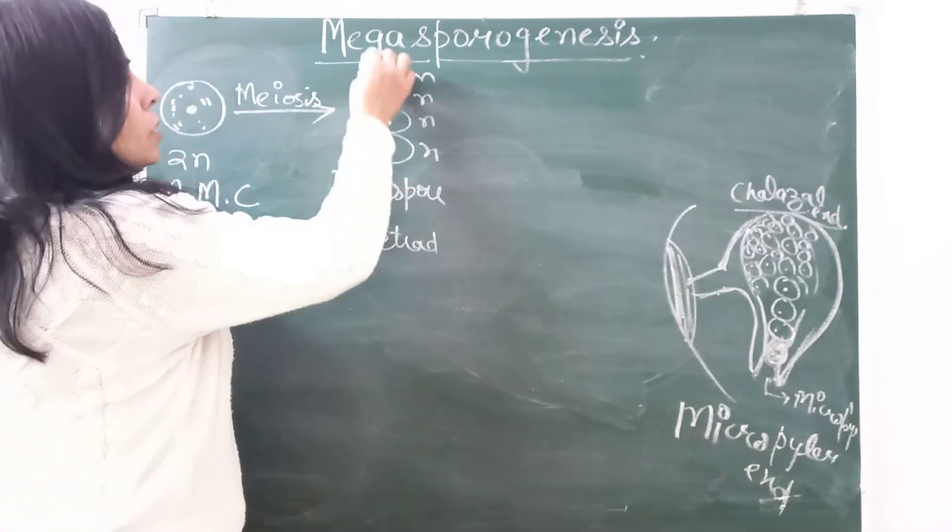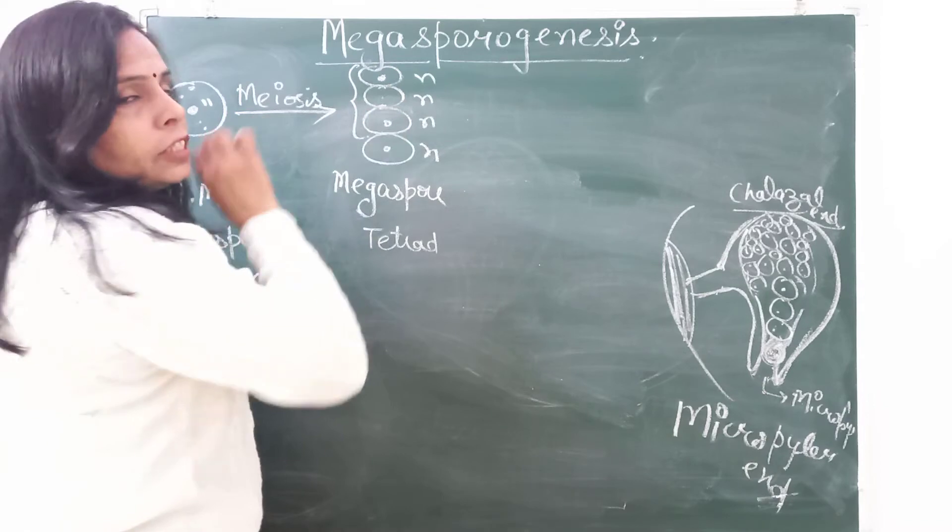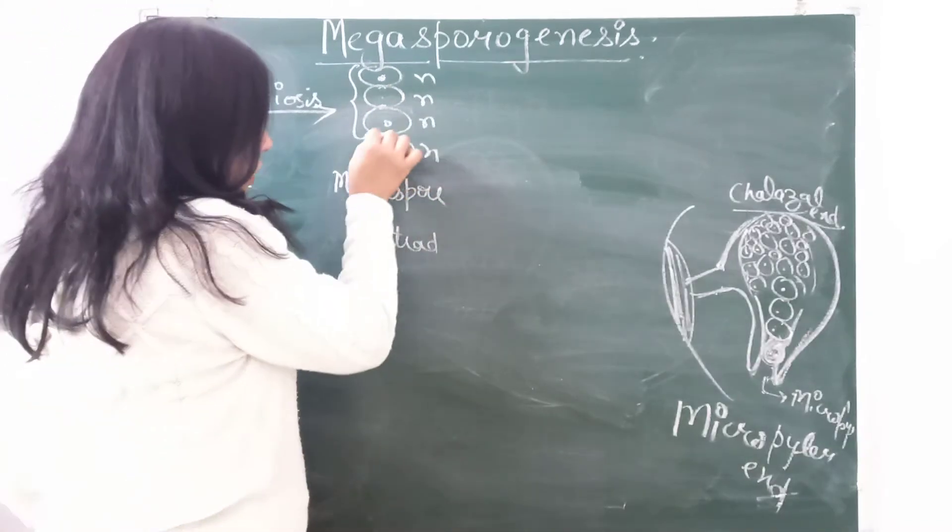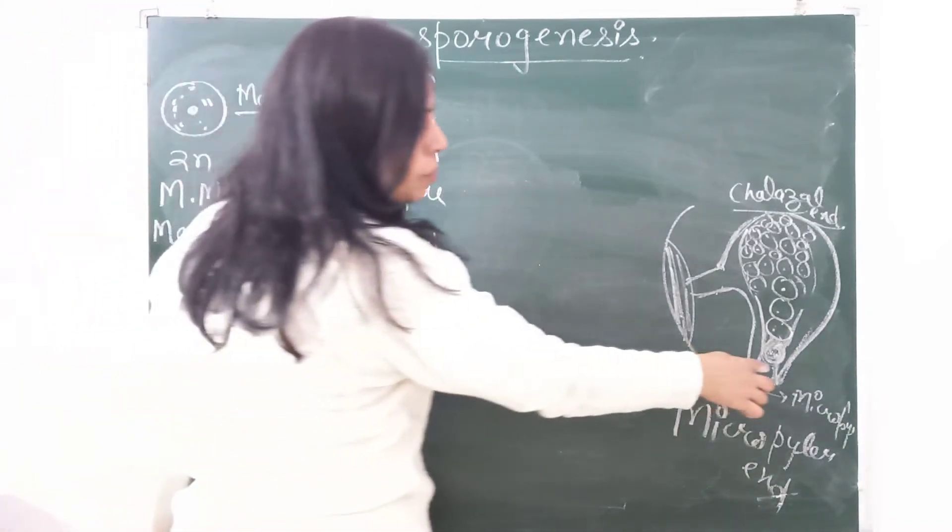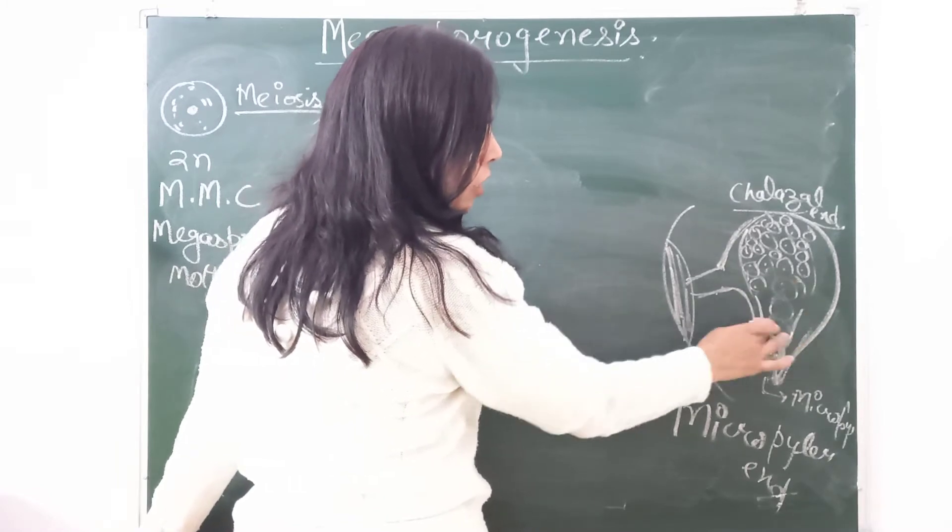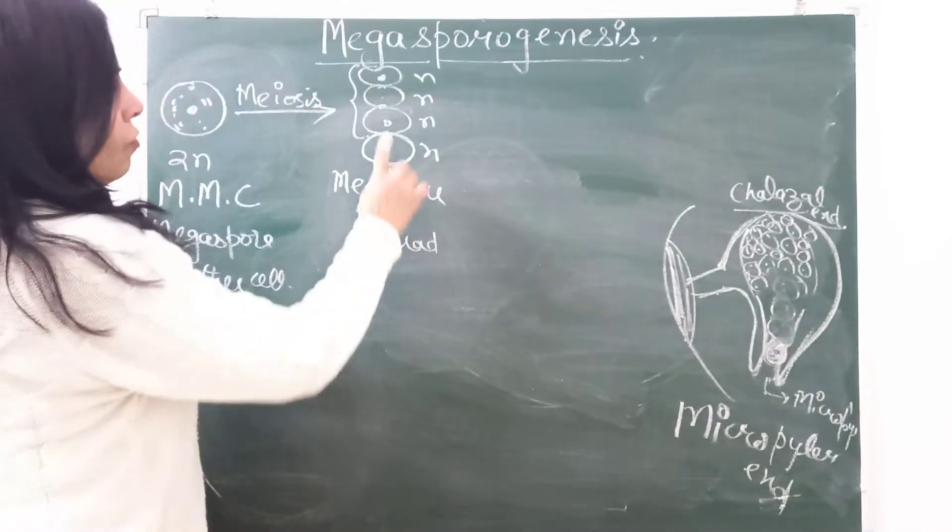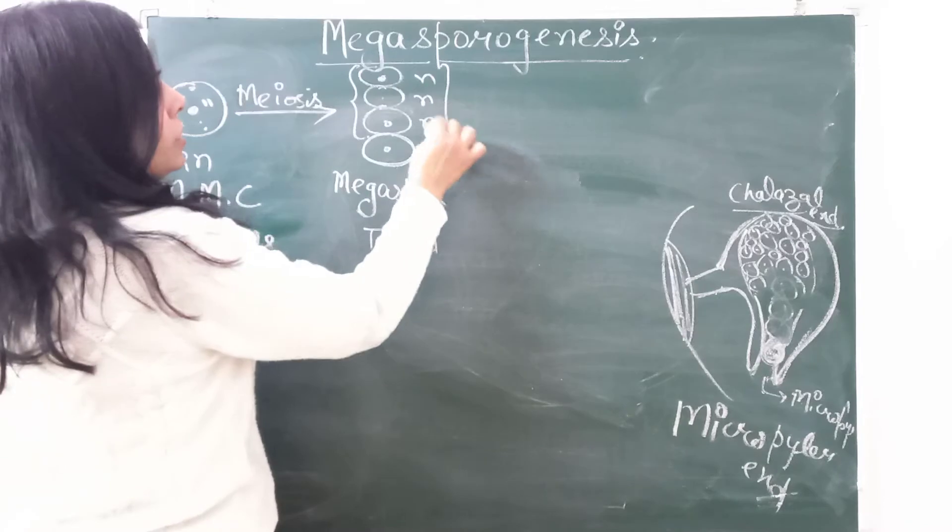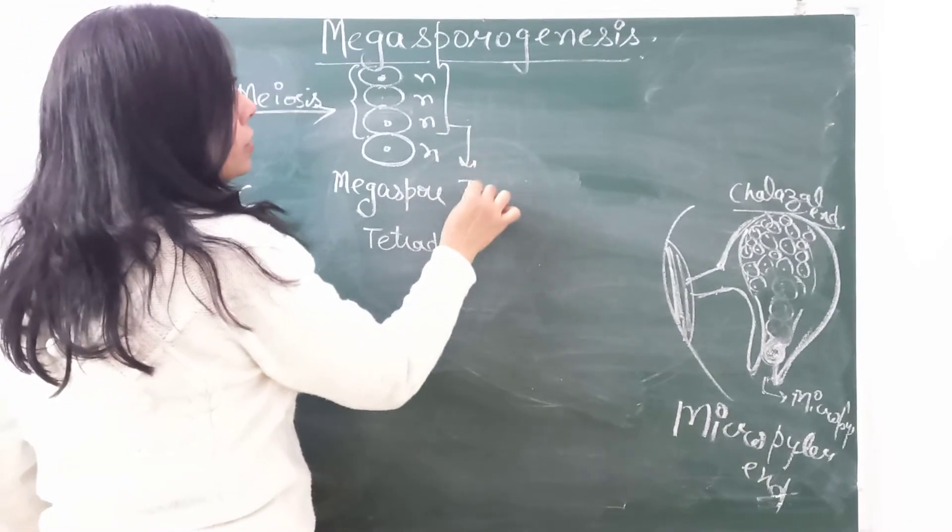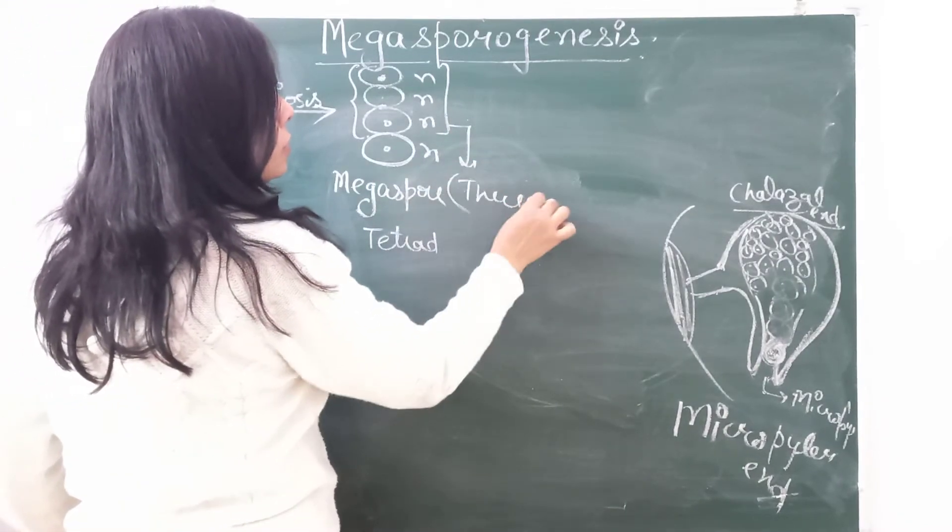But there is one difference here. In microsporogenesis, from microspore tetrad four microspores formed. But here, these three cells will degenerate. Only one cell, the functional cell which is towards this micropylar end—these three will degenerate. So let me write here that these three will degenerate.